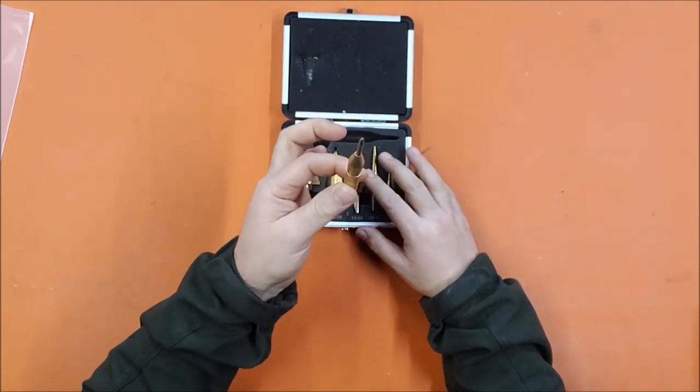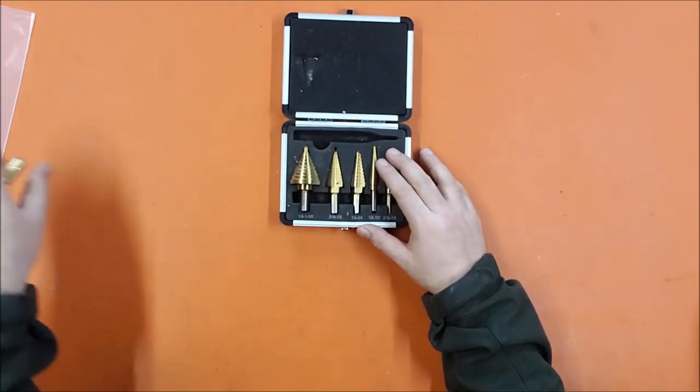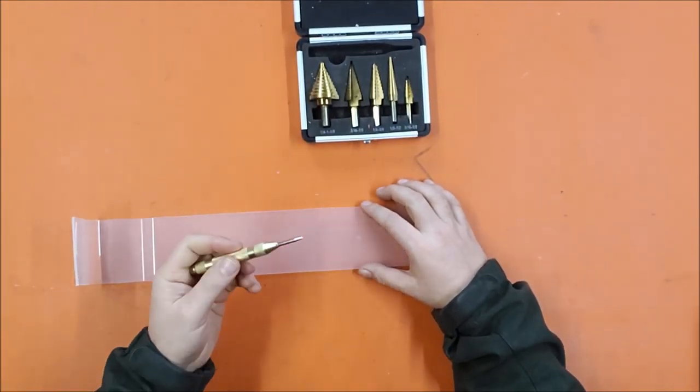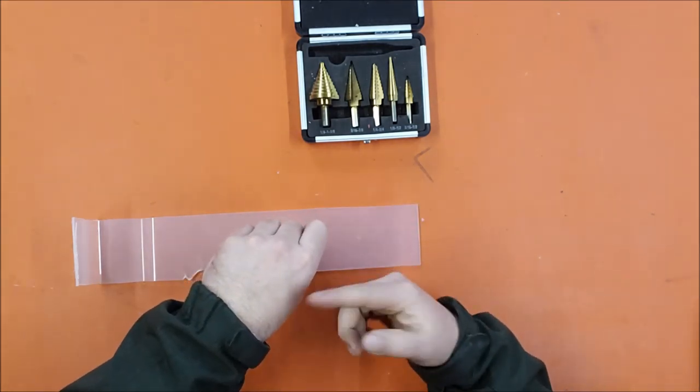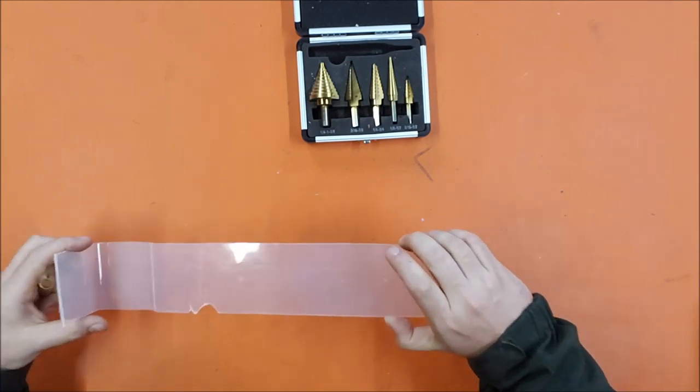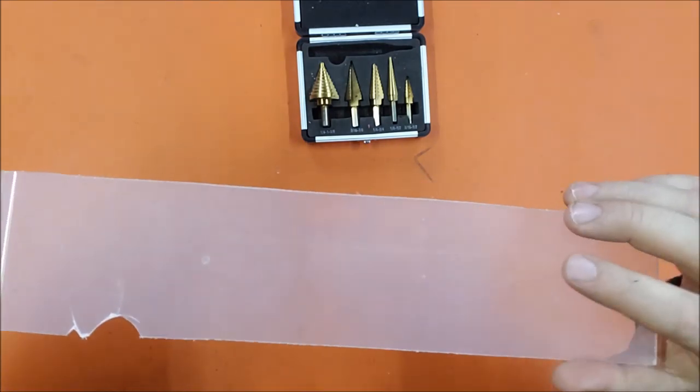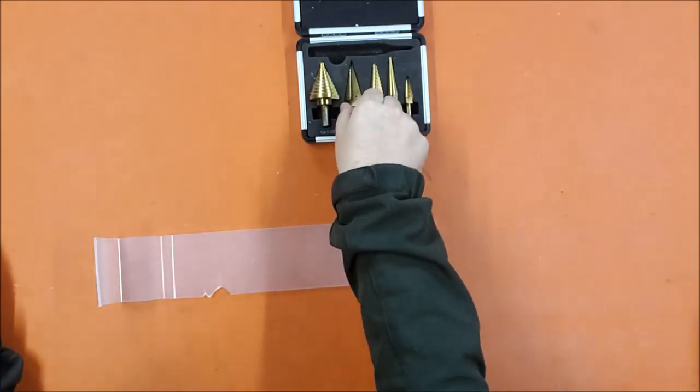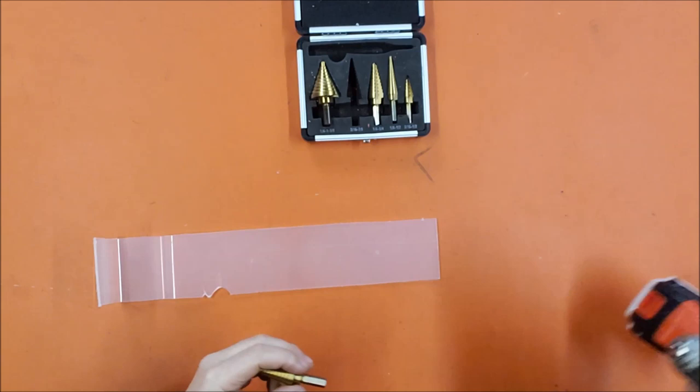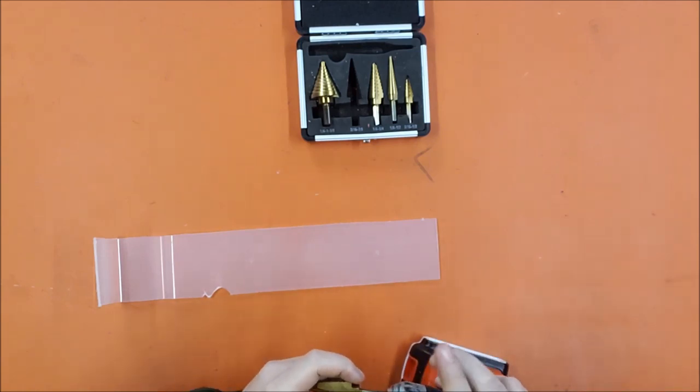It does also then come with a center punch, a spring-loaded center punch. So you push down on it, and then once it gets past a certain point, there's a spring-loaded bit that snaps home and will make a very distinct mark that allows you to then center your drill bit so that it doesn't wander around.